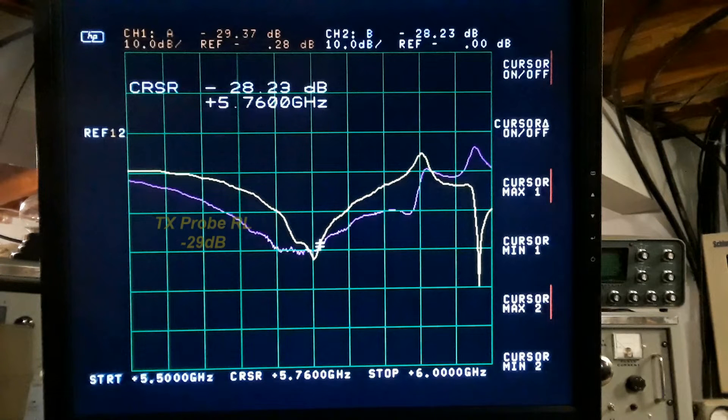And that's where I stopped. The return loss into the transmit probe is right around the area of negative 29 dB, pretty decent. And the isolation between the receive probe and the transmit probe is right in the area of negative 28 dB. So to me pretty good all around.